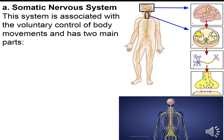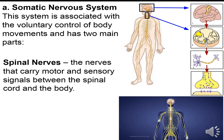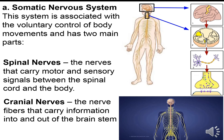The peripheral nervous system is further subdivided into two: somatic and autonomic. The somatic nervous system is associated with the voluntary control of body movements. It has two main parts: spinal nerves, which carry motor and sensory signals between the spinal cord and the body, and cranial nerves, which are nerve fibers that carry information into and out of the brain stem.